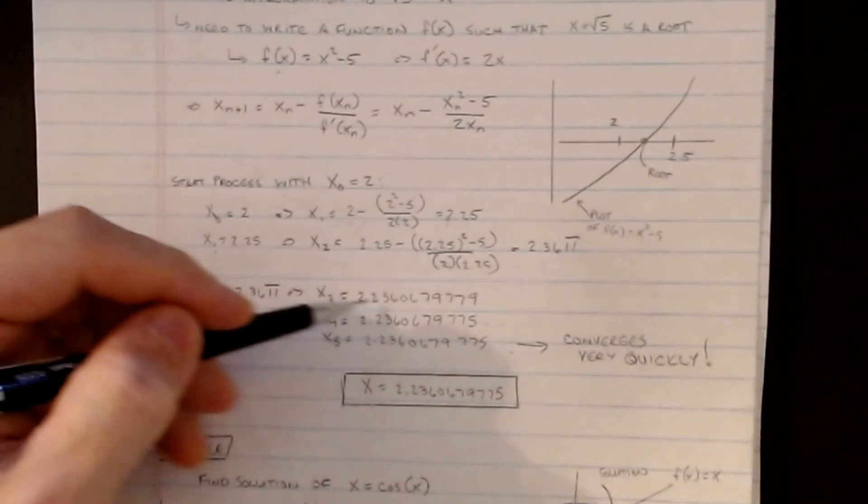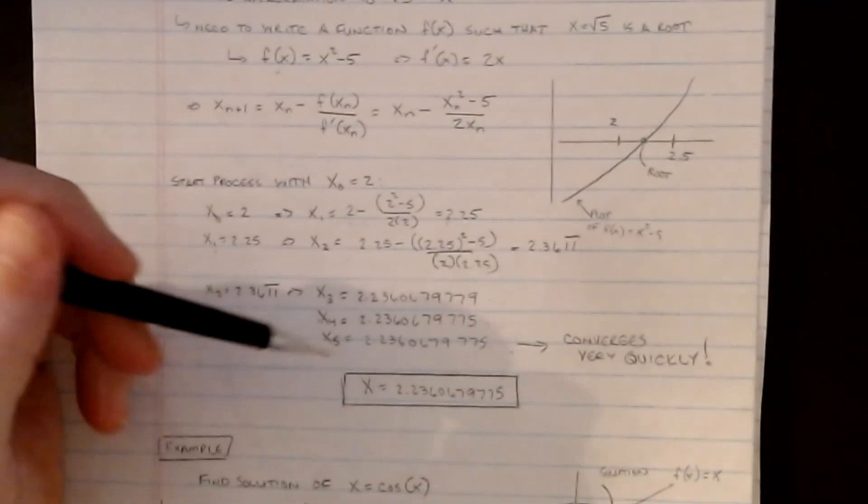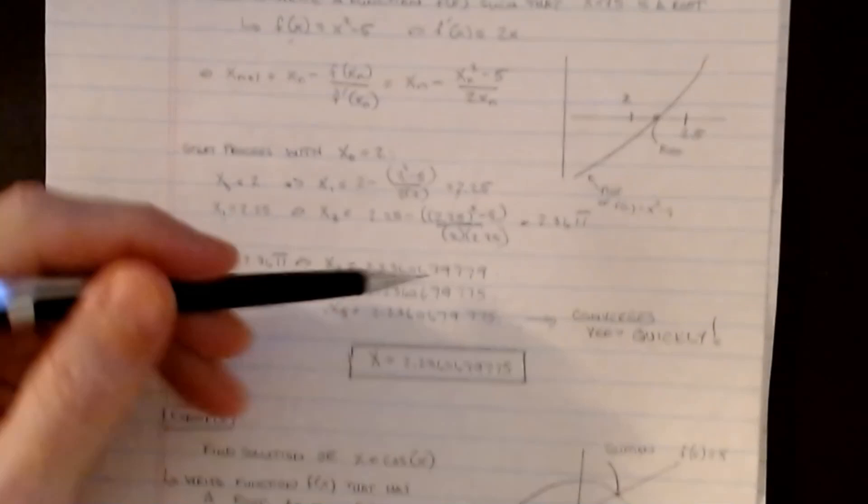In five steps we're at eight or ten decimal places of convergence, which is generally pretty good depending on how accurate you need. That's good news for this methodology — it locks in quickly because you're taking advantage of not only the value of the function, but also the value of the slope to correct directions.